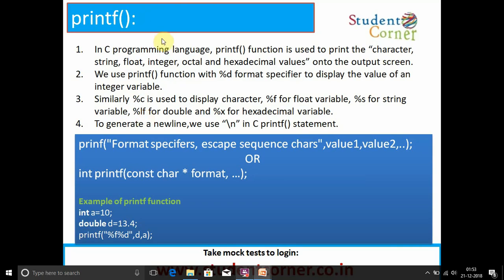Coming to the printf. In C programming language, printf function is used to print the characters, string, float, integer, octal and hexadecimal values onto the output screen. We use printf function with %d format specifier to display the value of an integer variable. Similarly, %c is used to display character, %f for floating variable, %s for string variable, %lf for double and %x for hexadecimal value. To generate a new line, we use slash n in C printf statement.